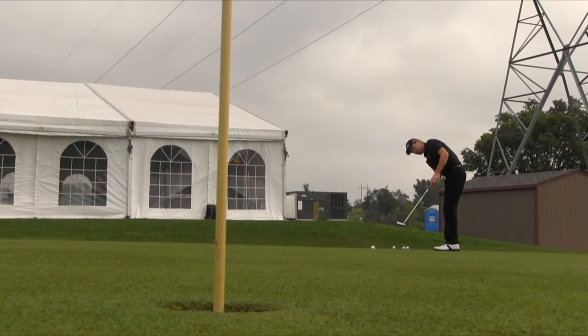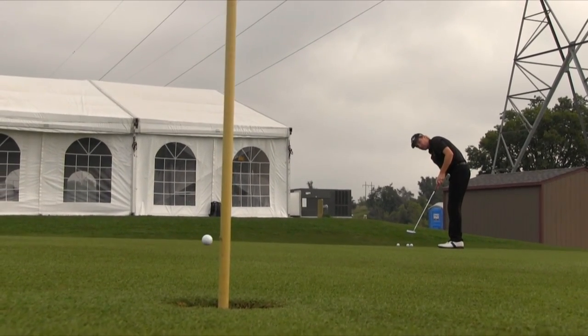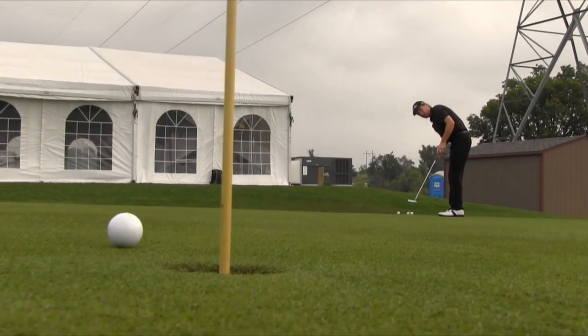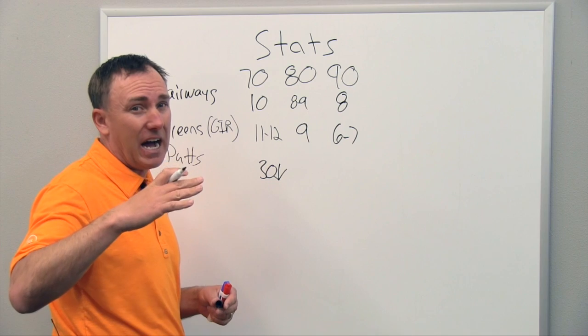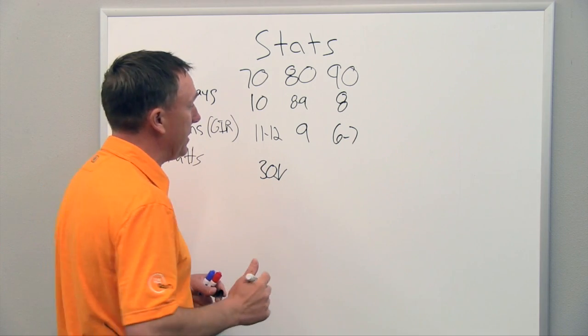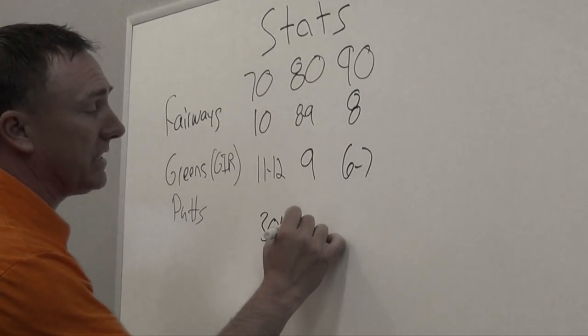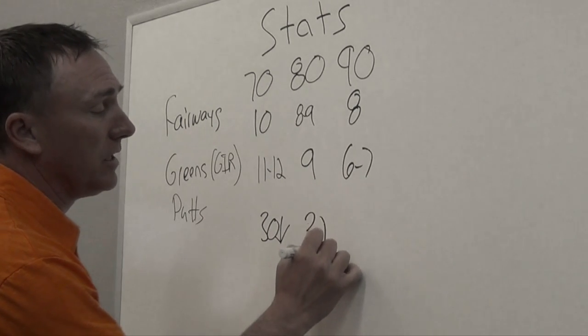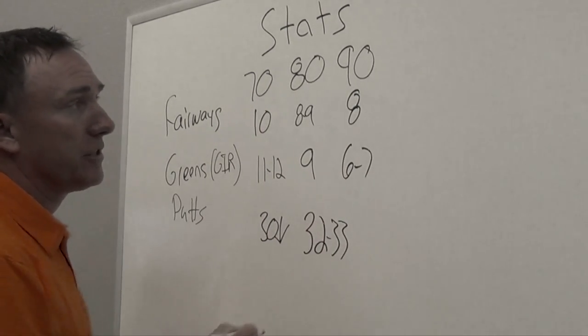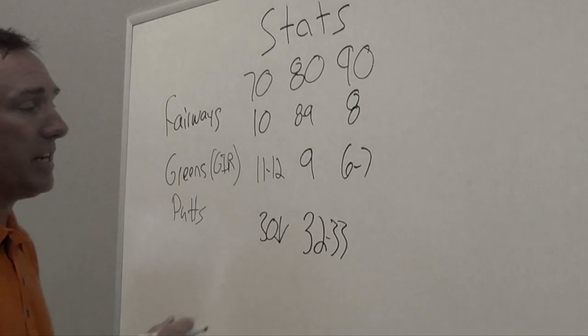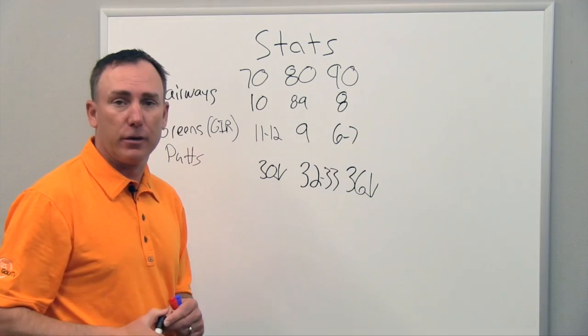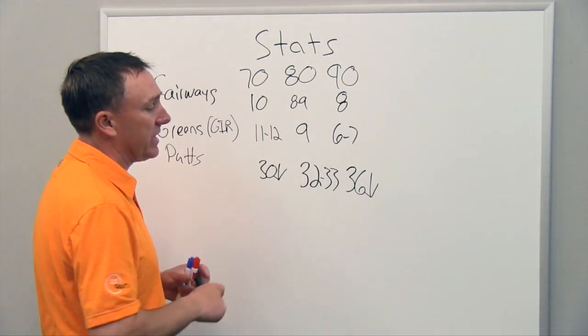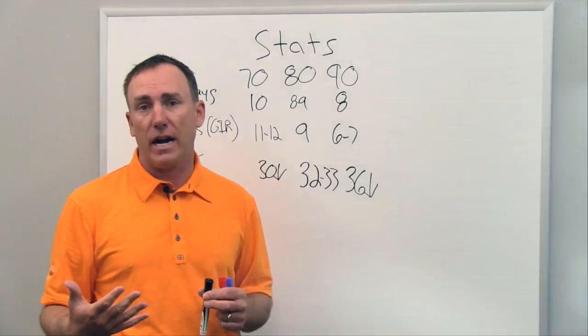When it comes to putts, anything in the 70s, you've got to be striving for right around 30 or below. If you're getting up around 31 or a little bit higher, you're probably not shooting in the 70s. If you're shooting in the 80s, I like 32, 33 is a good goal. And last but not least, if you're in the 90s, I like to see my students 36 putts is their goal, or hopefully a little bit lower than that. So that gives you a little bit of a guideline of kind of where we're at.